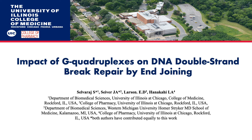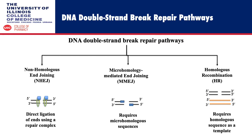Welcome to our poster on the impact of G-quadruplexes on DNA double strand break repair by end joining. DNA is often exposed to DNA damage and resulting breaks are repaired by several different pathways. In the case of double strand breaks, three main pathways exist.